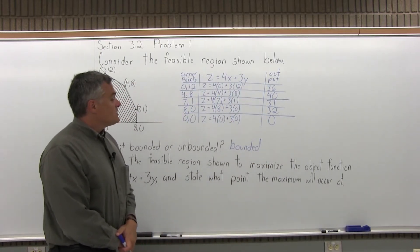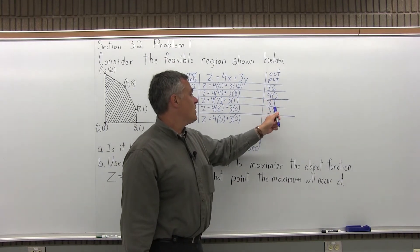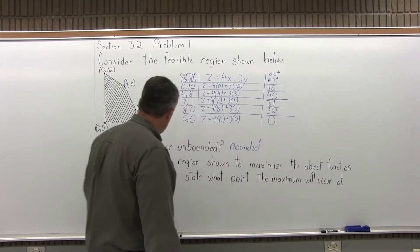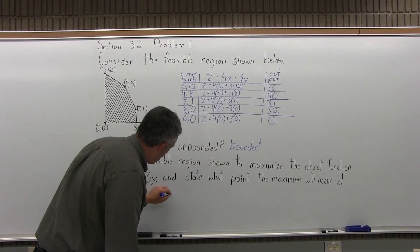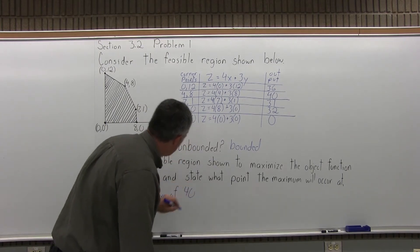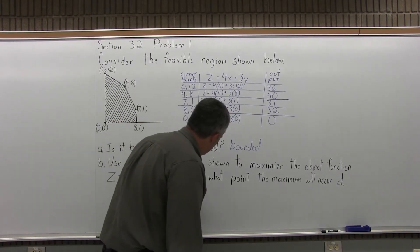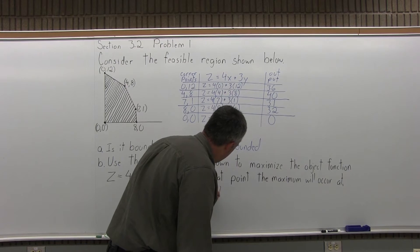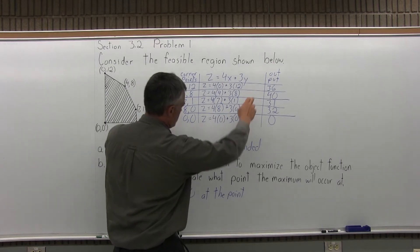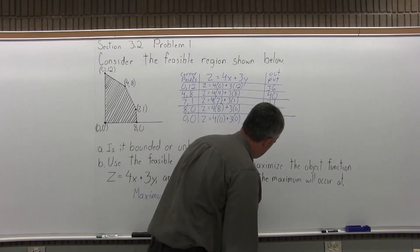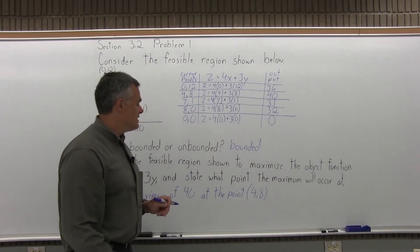The question asks for the maximum output. Our choices are 36, 40, 31, 32, or 0. The maximum is 40. So the answer is maximum of 40, and it asks at what point — the maximum occurs at the corner point (4,8), so x is 4 and y is 8. That's the answer for part B.